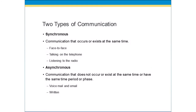There are two types of communication and we engage in them on a daily basis. The first one is synchronous communication — this is communication that occurs or exists at the same time. Face-to-face communication, talking on the telephone, or even listening to a talk radio show are synchronous communication. When we are face-to-face and communicating, we're in the same time period having dialogue back and forth.